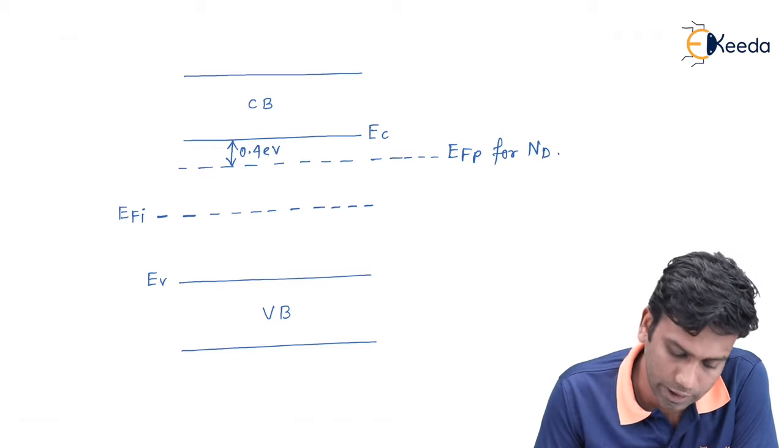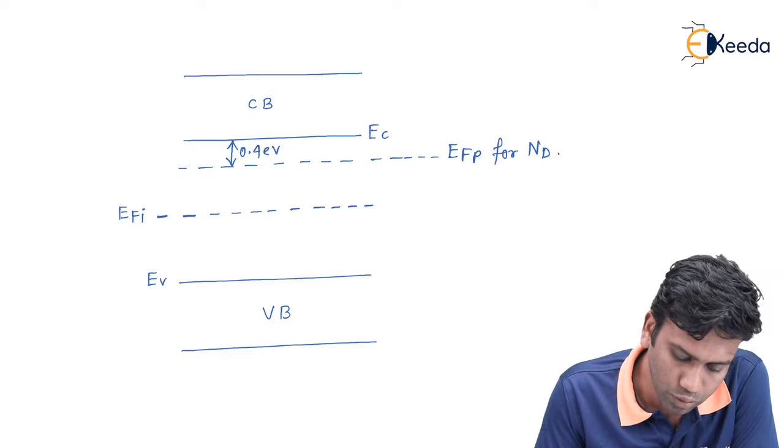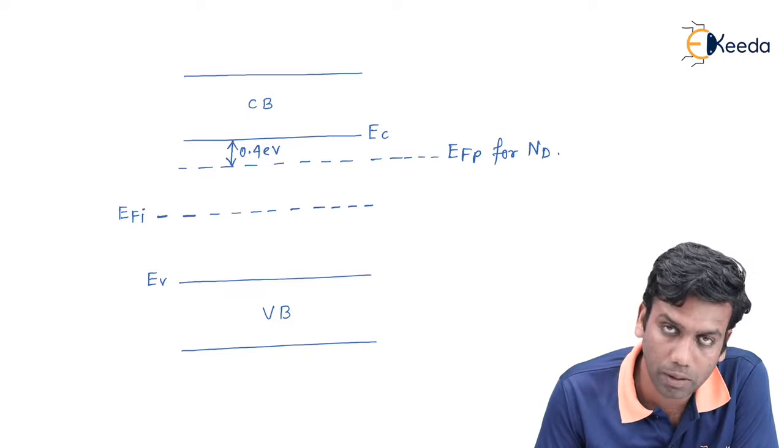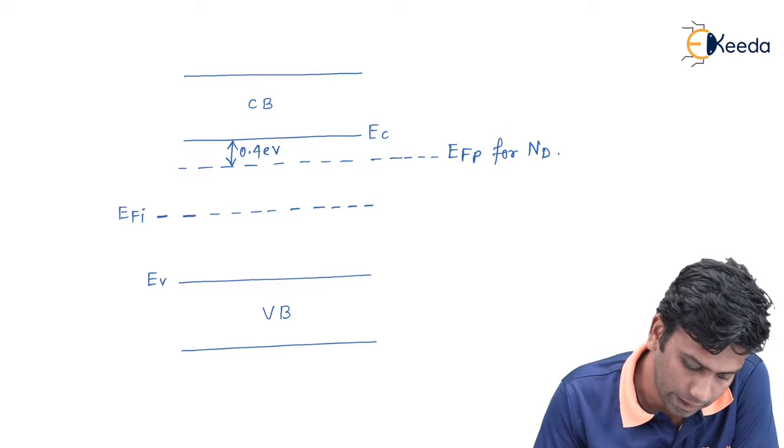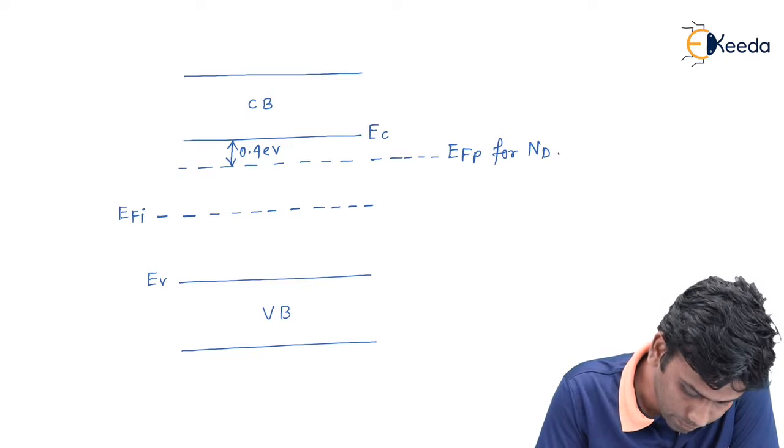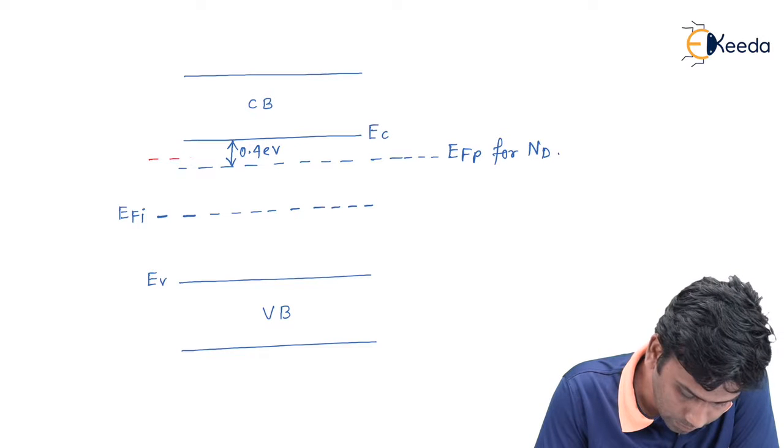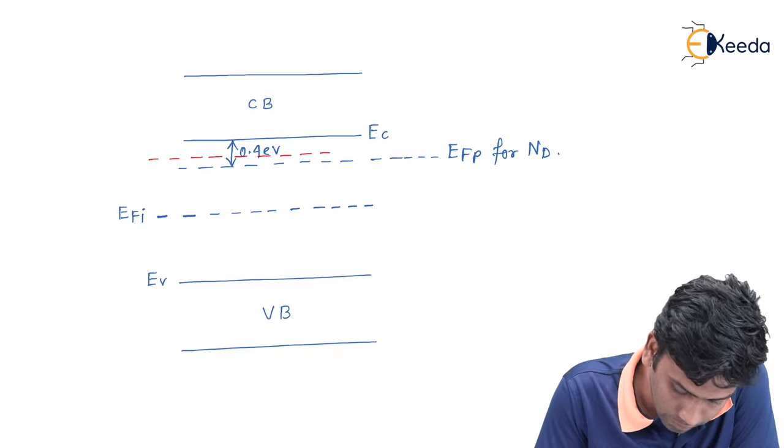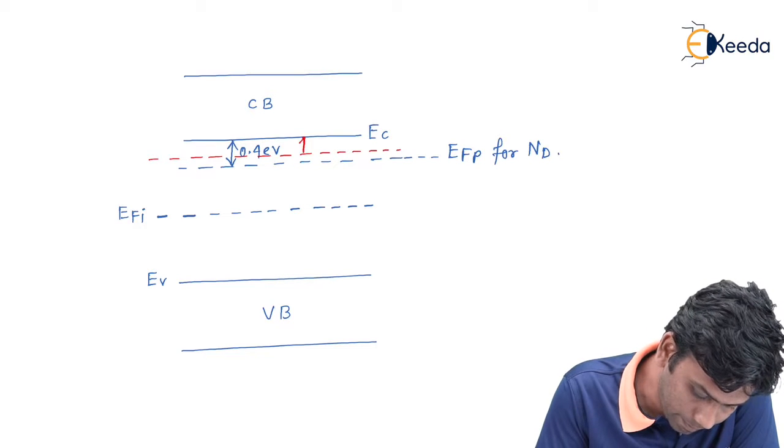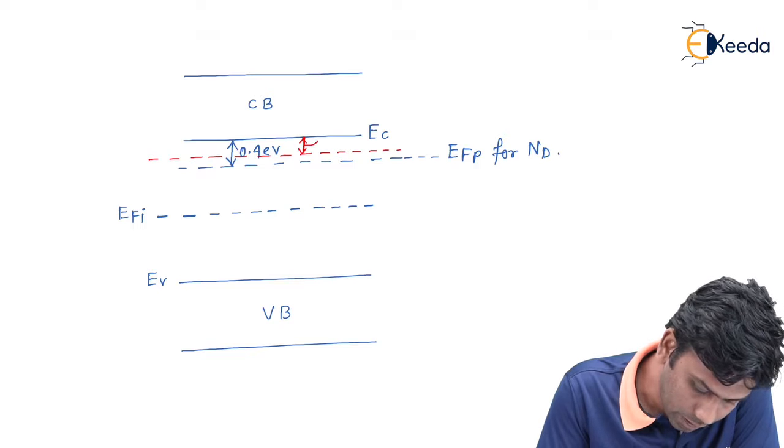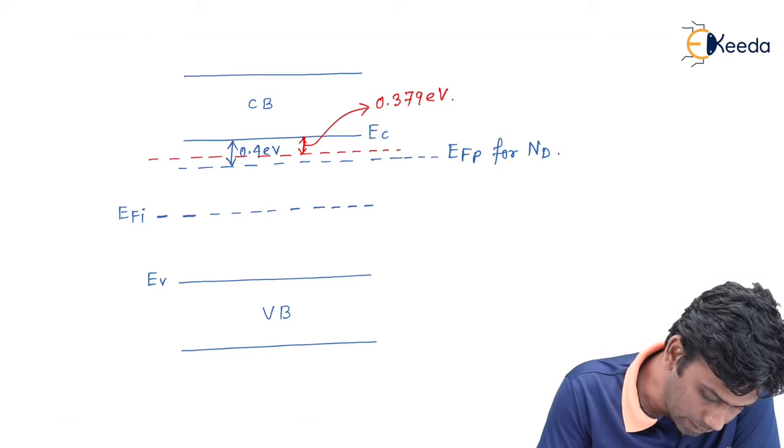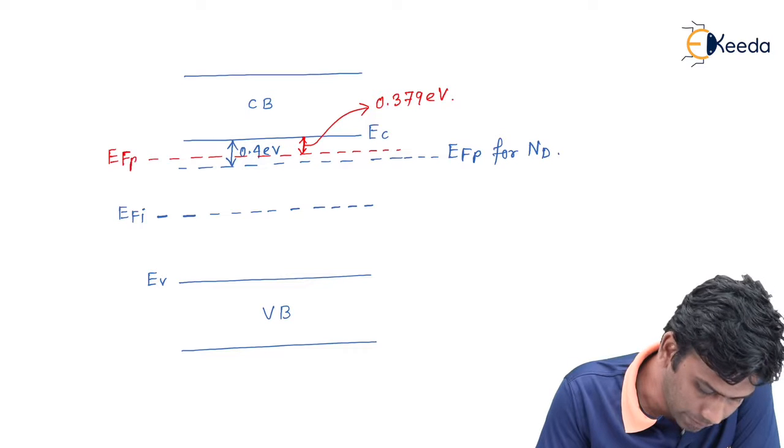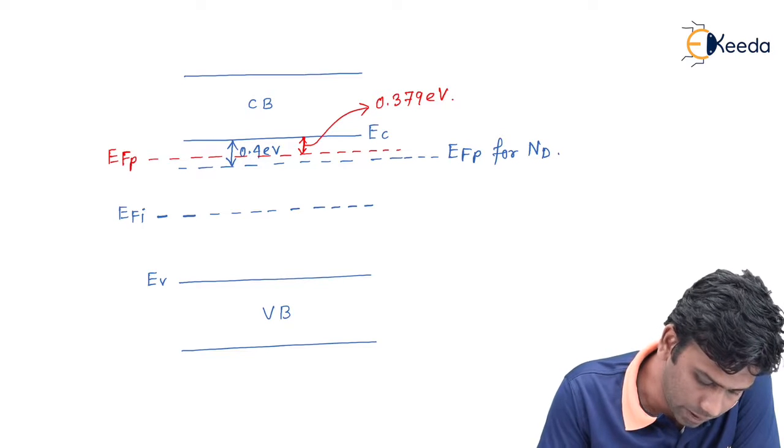Now, the doping concentration has been changed to 2Nd, that means this has been doubled. So, the new Fermi level position can be drawn like this. And this gap of energy, we have found it as 0.379 electron volt. And this is the new position of the Fermi level.